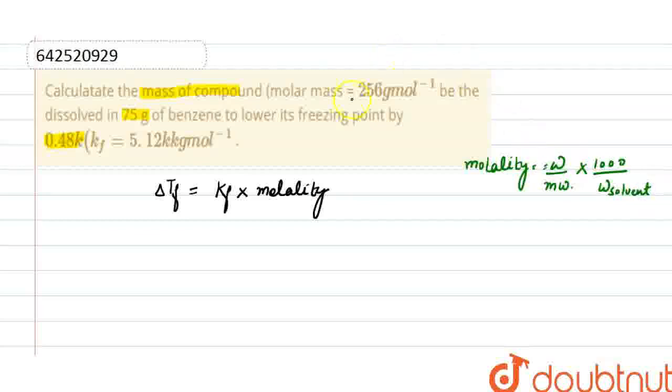Now put the values in the given formula. Delta TF is 0.48, where KF is 5.12, and molality is weight of solute we have to find out. Molecular weight of solute is 256.